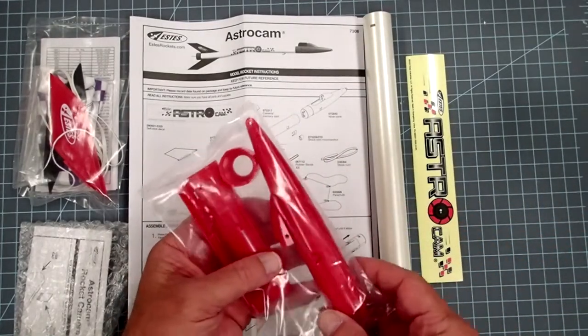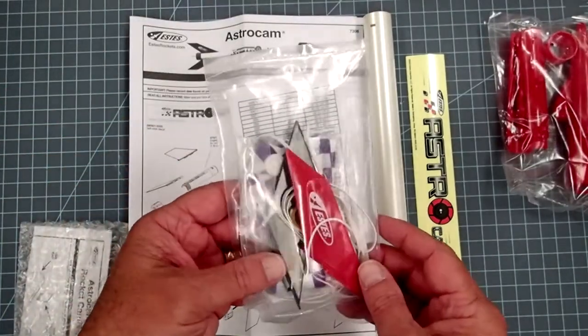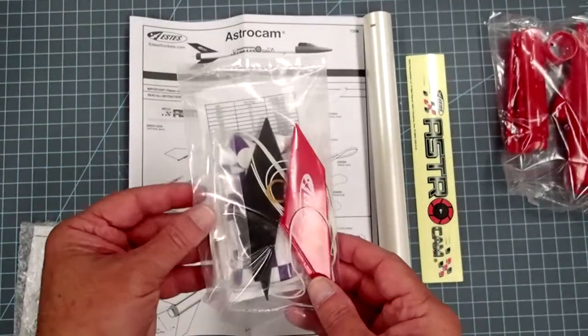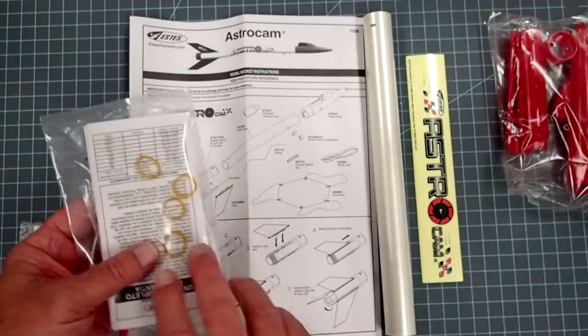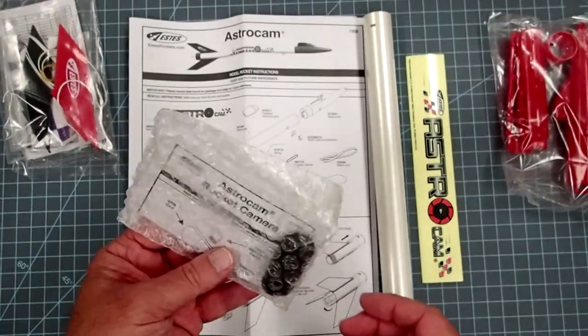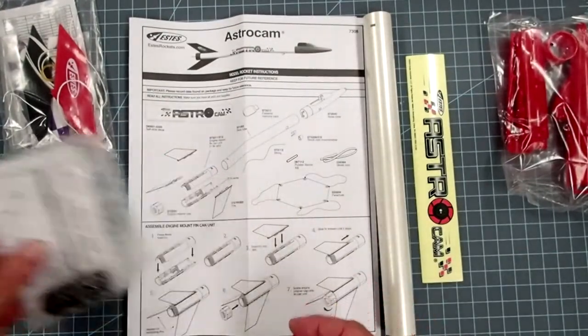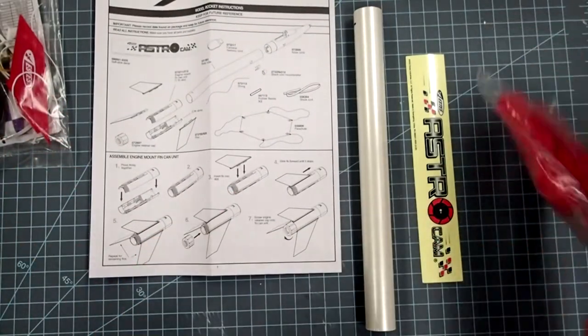This package contains the fin can and the nose cone. This package contains the fins, the shock cord, and the parachute, as well as a whole bunch of rubber bands for attaching the camera. And then finally, the AstroCam camera itself comes in its own package here. So, we'll start with the fin can.